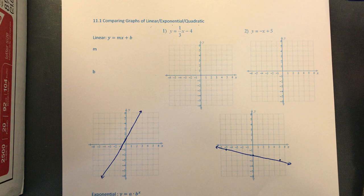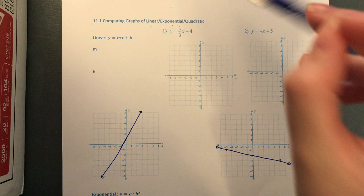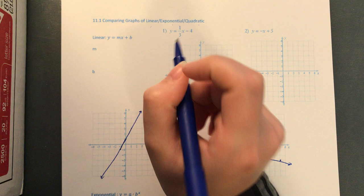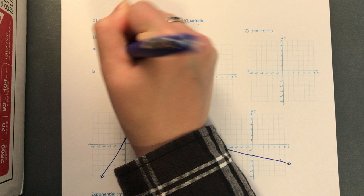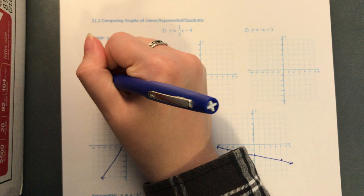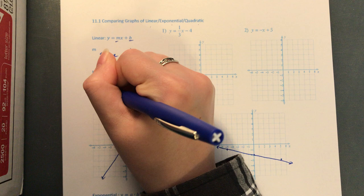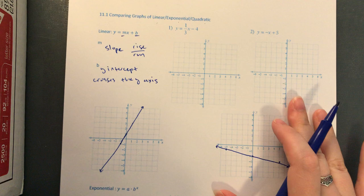In this first week we're just going to review graphing each one. It's been a while since we graphed linear and exponential functions. A few weeks ago we learned how to graph a quadratic function, so hopefully that one's still a little fresh. I'm going to start by reviewing how to graph a line. For linear functions, y equals mx plus b. M is your slope, which is rise over run. B is your y-intercept, which is where it crosses the y-axis.